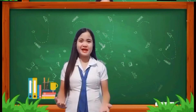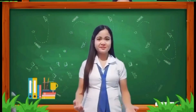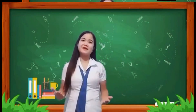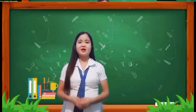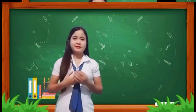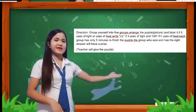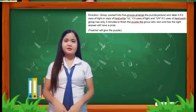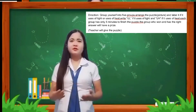Class, do you understand? Very good. You can start now. Are you all done? Okay, good. Then pass all your papers at the count of five. Now class, group yourself into five groups. Are you done? Okay, good. I will give a puzzle for each group. Listen carefully. All you need to do is to arrange the puzzle and label it — whether it is uses of light or uses of heat.